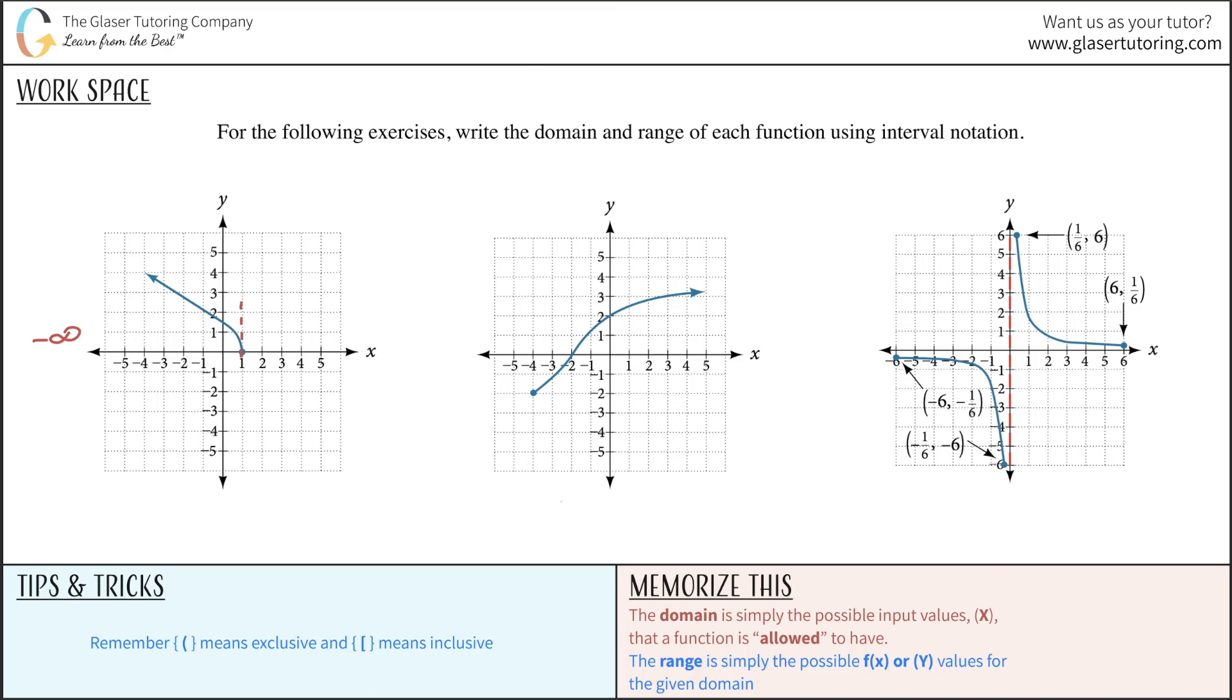And it is inclusive of this point, if you notice it is a filled in circle. So therefore, the domain of this particular function will be all the way from negative infinity—we always write the lower value first and the higher value second—exclusive of it, because you can't actually include infinity, it's just an idea, it's not a number, all the way to one, inclusive of it. Remember the parentheses means exclusive and the brackets means inclusive.